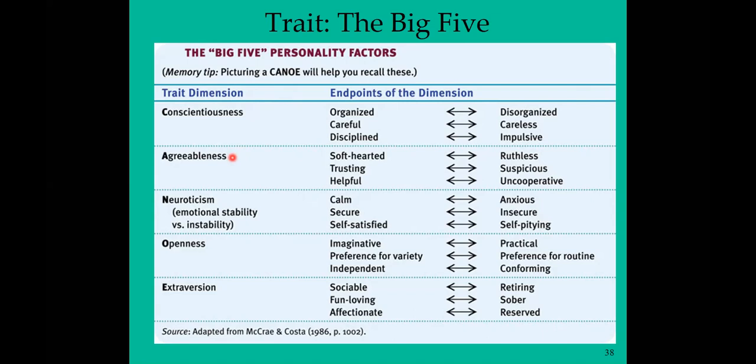Agreeableness is just what it sounds like. People who score high are soft-hearted, compassionate, trustful, helpful, cooperative, and have warm feelings toward other people. At the low end, you have a person who is ruthless, takes advantage of other people, suspicious, uncooperative, and may enjoy harming others at the extremes.